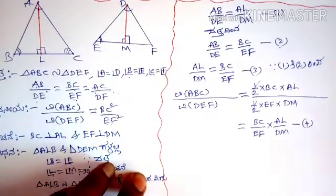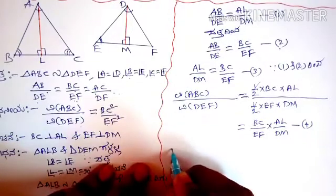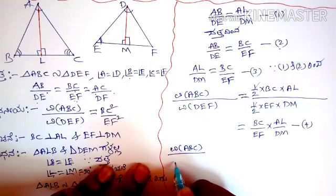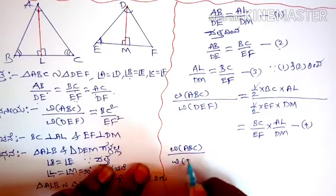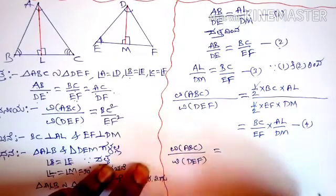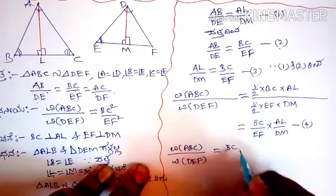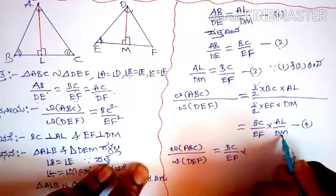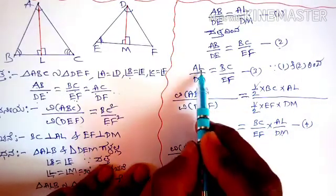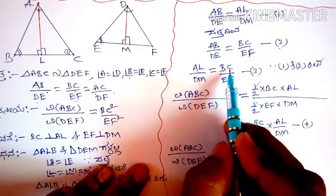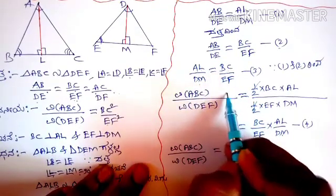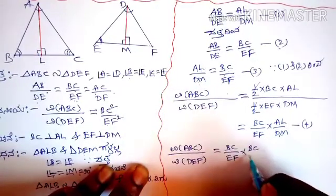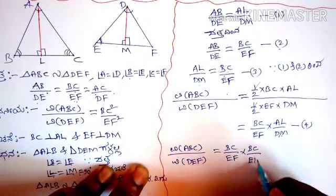Now we will add this: A, B, C and EF. This is B, C, EF — AL upon DM. This is the same thing. AL upon DM is BC upon EF. We will see that AL upon DM is BC upon EF.